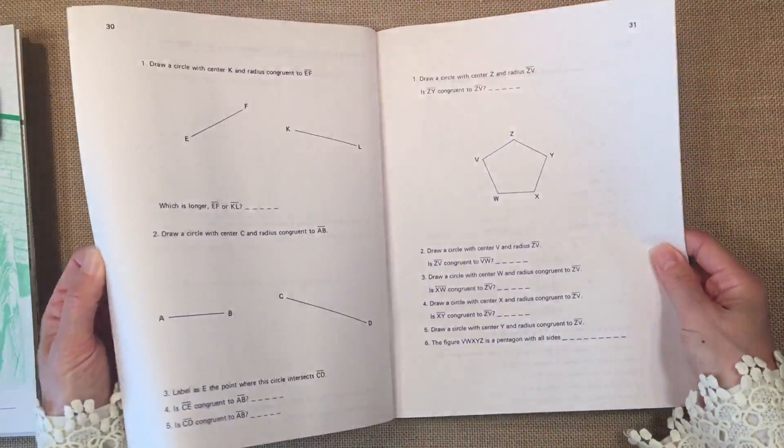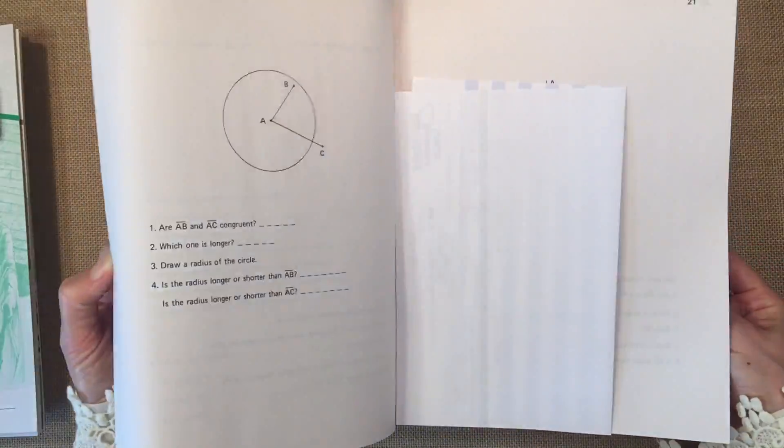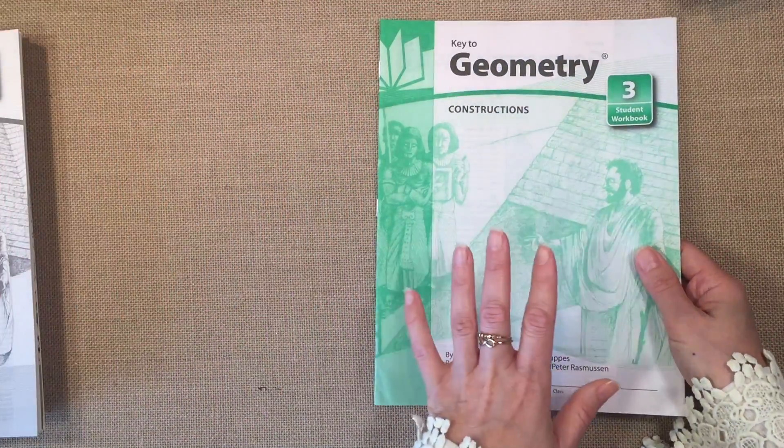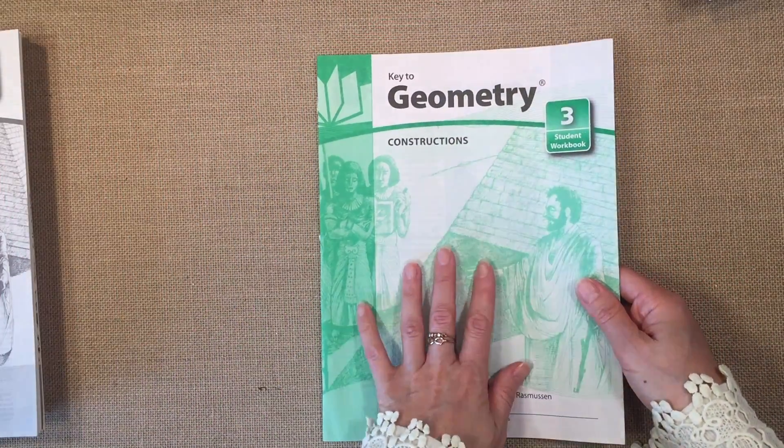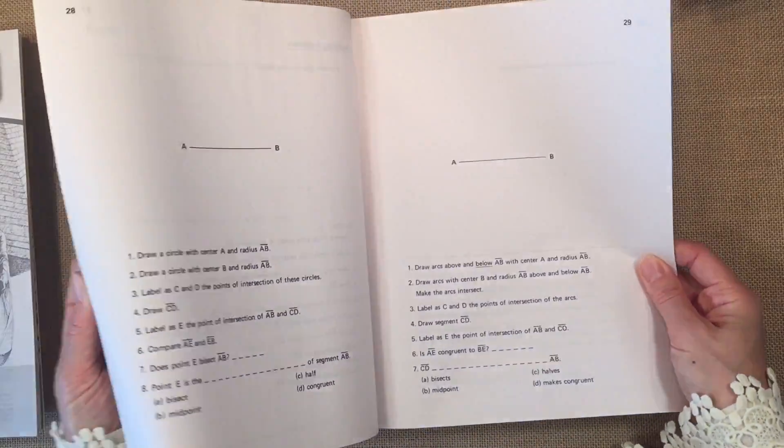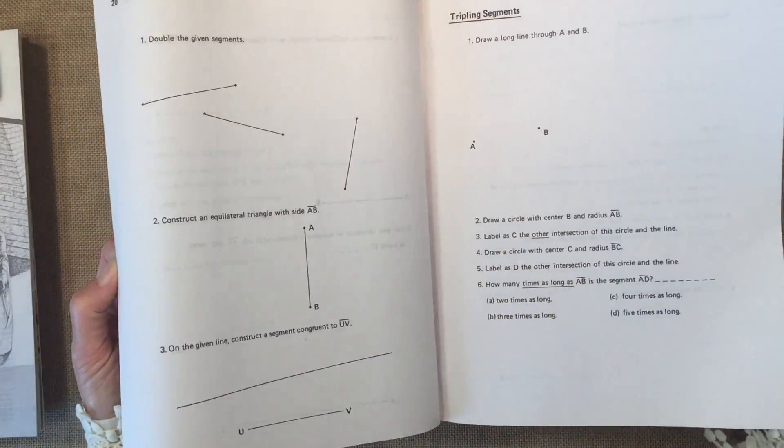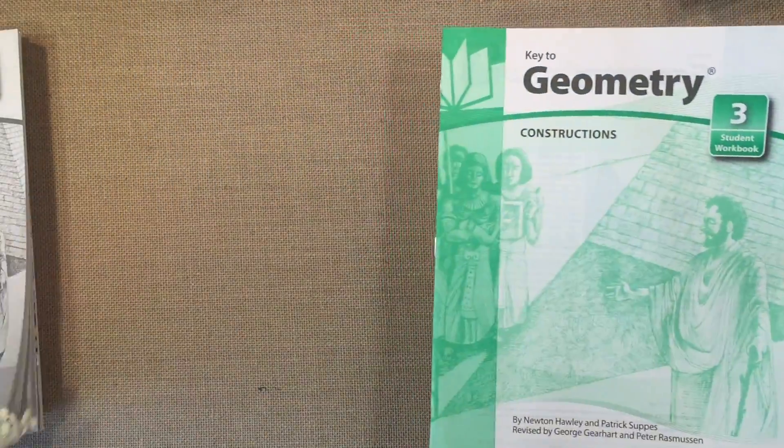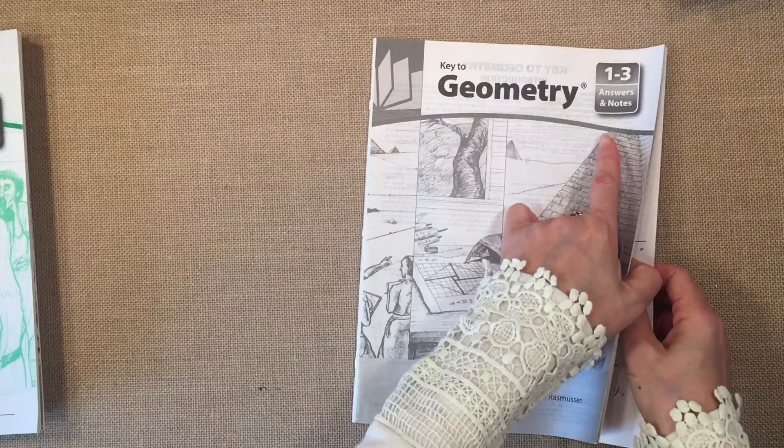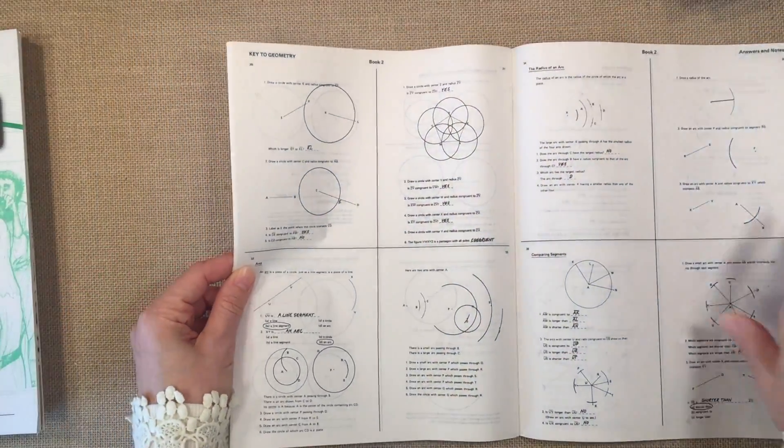So the first one is line segments. And then the next one is about circles. And that was actually the invoice from Rainbow Resource. I bought these from Rainbow Resource, but I've also bought them directly from the Key2 curriculum website. This one is geometry called constructions. And then after the first three books, you can also get the answer key, which has the answers and the notes for all the first three books.